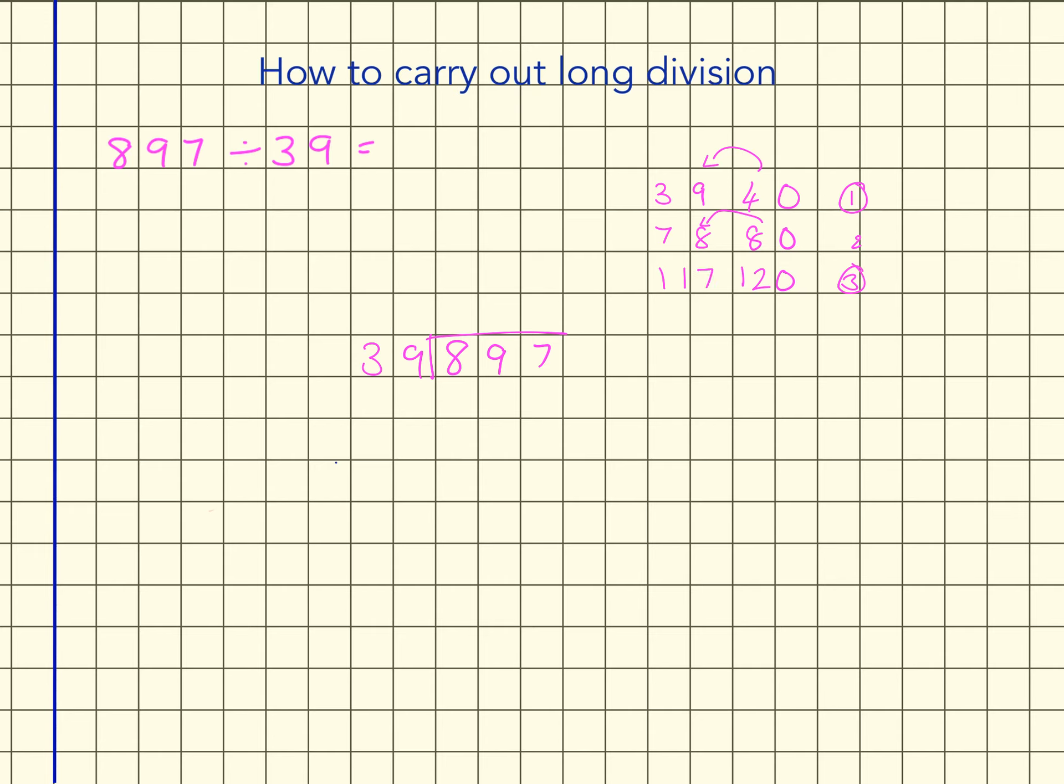I'm just going to stop there for a moment because I've already spotted that I can actually do the first step of my calculation. So 39 into 8 is 0 because 8 take away nothing is 8. So we're going to bring down the 9. So we're now working with 89.